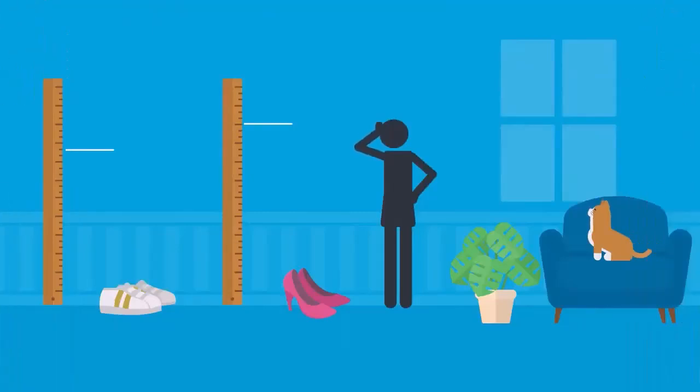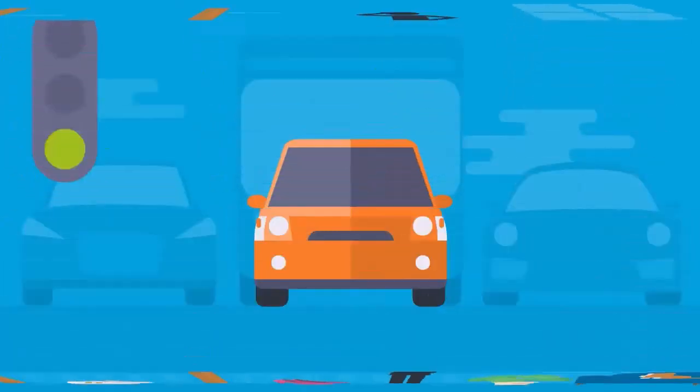Measurements of your height might be a little different based on which shoes you're wearing or your posture. Measurements of commute time might fluctuate based on your luck with red lights.